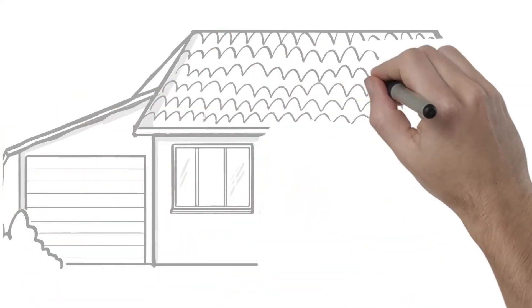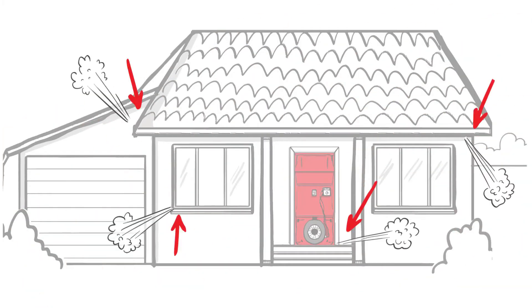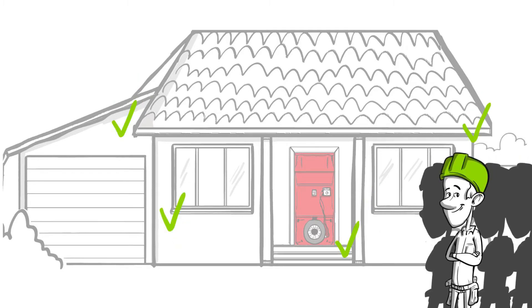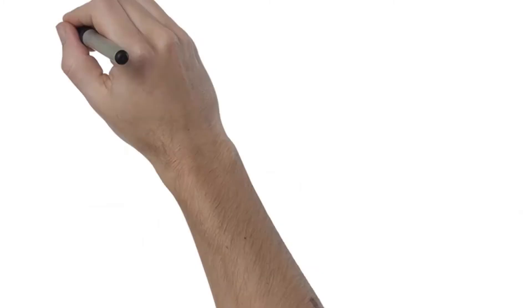Island Aerobarrier pressurizes and seals the home with a GreenGuard gold-certified sealant. The escaping air carries the sealant and seals the gaps from a staple hole up to a half-inch.